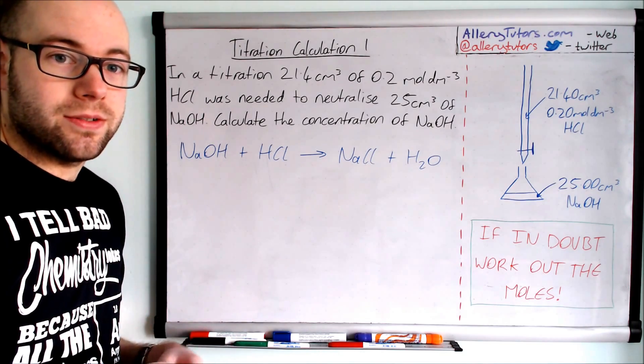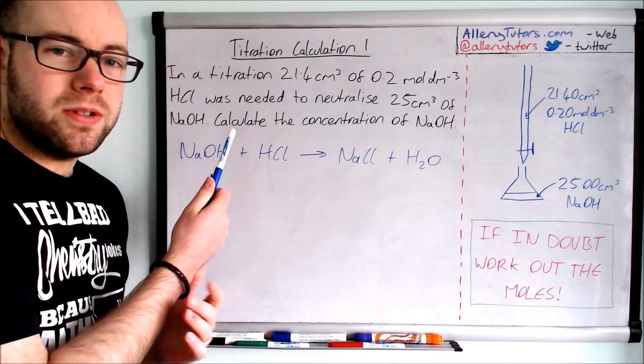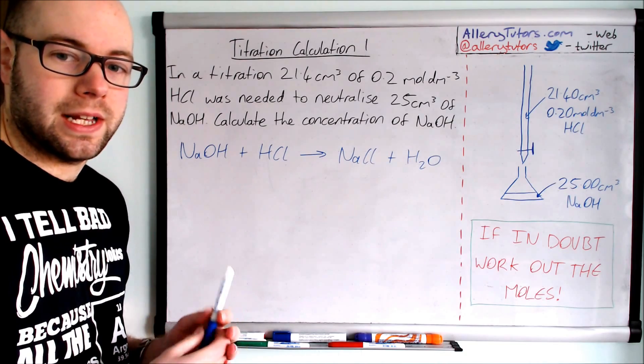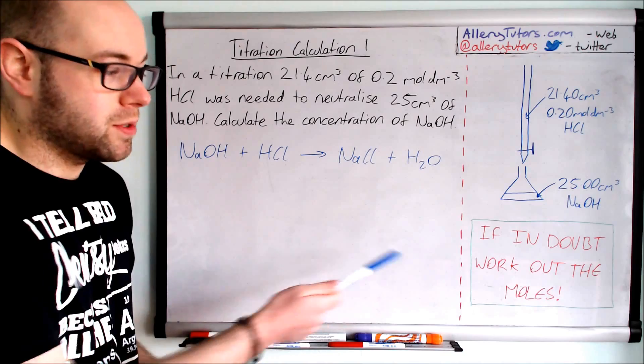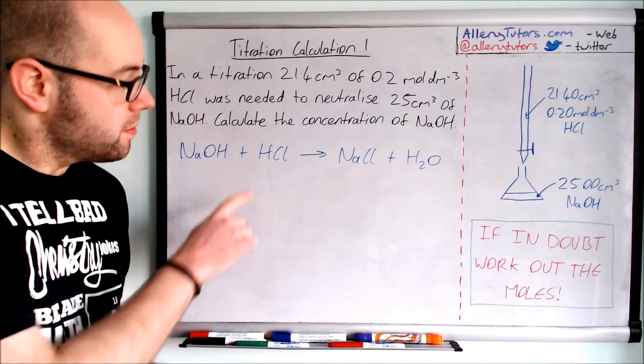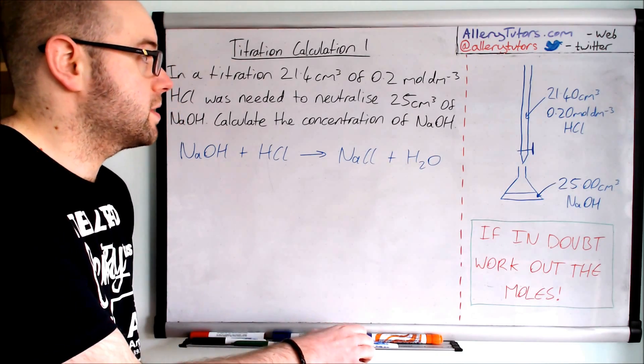The next thing we need to do is work out exactly what we've got. We've been given loads of numbers here and it's about getting them organized into different parts. One of the rules I like to use when working out titrations is: if in doubt, work out the moles, and you'll see why later on. So we're going to start and split these things up.